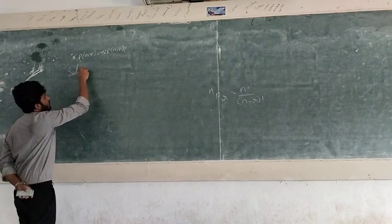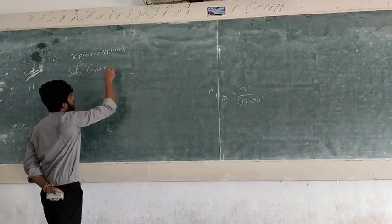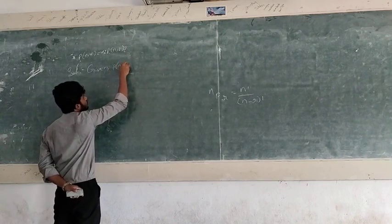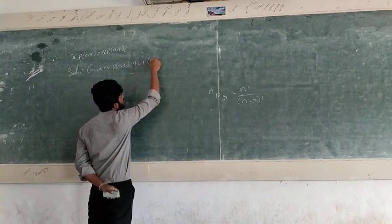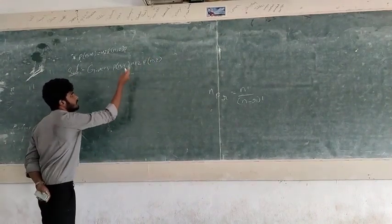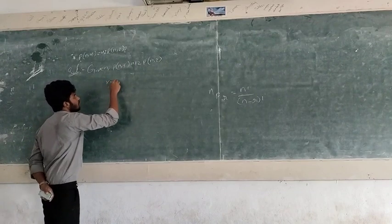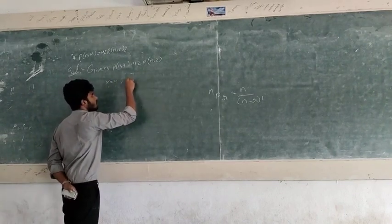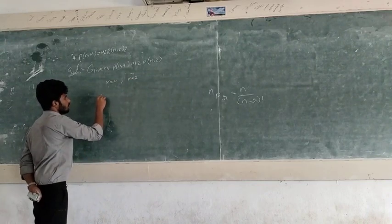We are given P(n, 4) = 42 × P(n, 2). We can take the LHS side with R equal to 4, and on the RHS side R equal to 2. We can write the permutation formula.